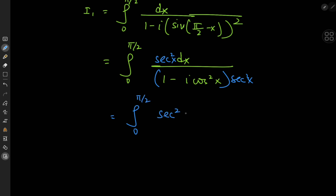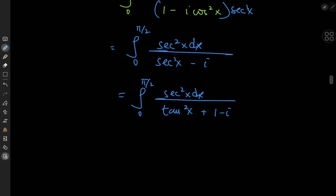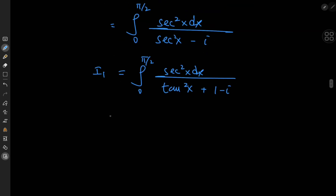Now let's expand using the reciprocal of the cosine, that is the secant function. We multiply numerator and denominator by sec²x, giving us sec²x dx divided by sec²x minus i. And we expand sec²x as 1 plus tan²x, so we have sec²x dx divided by tan²x plus 1 minus i. For the substitution, we let tan x equal u, which implies sec²x dx equals du.